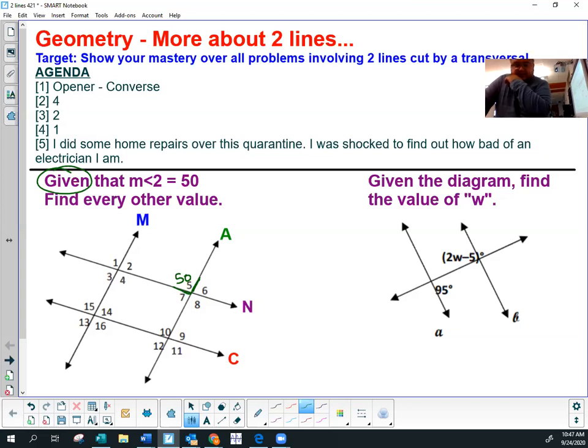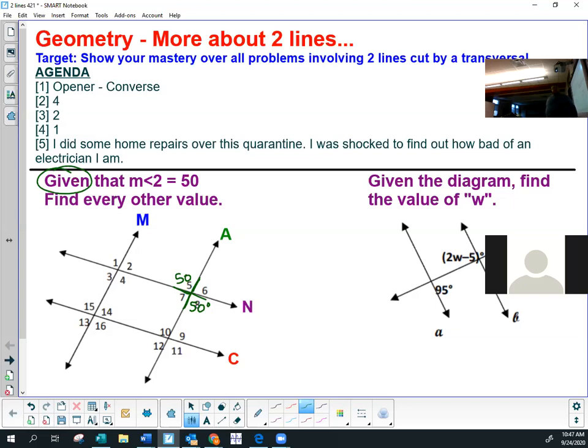Extra cool points for who comes off mute and actually tells me. What's another angle besides 50? Dante, you're close. They don't all equal 50. Then would it be 8? Okay, Dante, I love that. Tell me why angle 8 should equal 50 degrees. You are correct. Give me a reason why though.